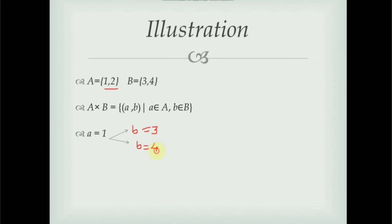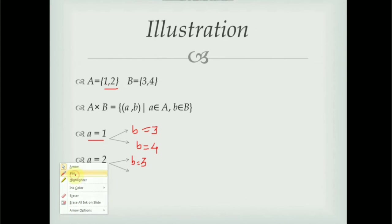Similarly, taking the second element a = 2, we pair it with both elements of B: b = 3 or b = 4, giving pairs (2,3) and (2,4). So A cross B is the collection of pairs: {(1,3), (1,4), (2,3), (2,4)}.